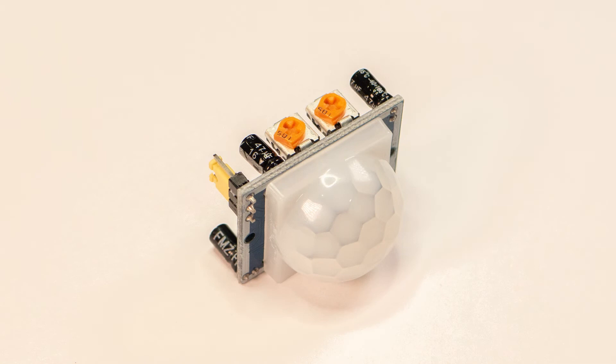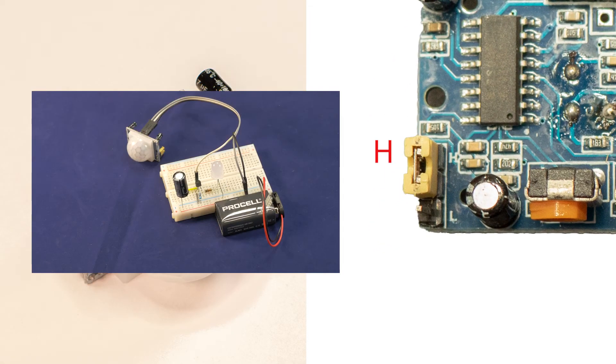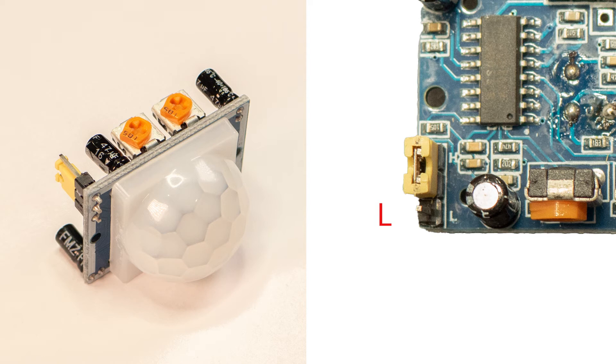Some boards have a jumper which you can switch from H to L. H means re-triggering so if you stay moving around the sensor the light will stay on until you move away. L means single triggering so once it's triggered the light will stay on for its set time and then go off again until a new motion is detected nearby. Re-triggering is probably the best way to leave it set up in most circumstances.